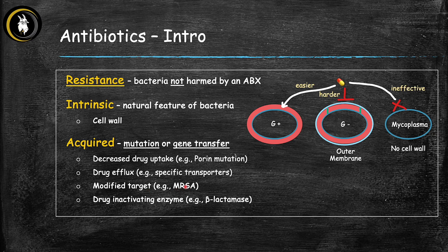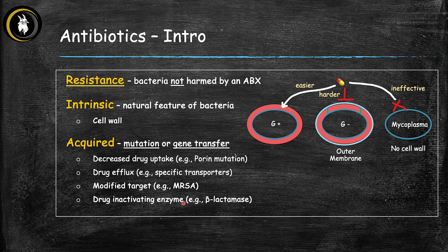The best and most high-yield example of modified target is MRSA — methicillin-resistant Staph aureus. The reason Staph aureus is resistant to methicillin is because it's modified the target of methicillin. The fourth very important mechanism is drug-inactivating enzymes — bacteria have enzymes that can actually inactivate the antibiotic itself. A common class are beta-lactams; many bacteria have developed beta-lactamases which inactivate the beta-lactams so they can't kill the bacteria. These are the four main mechanisms of acquired antibiotic resistance.